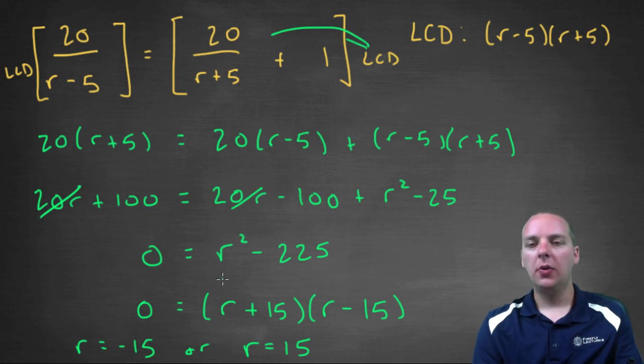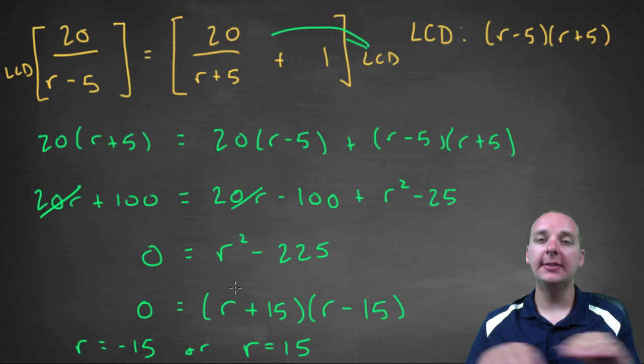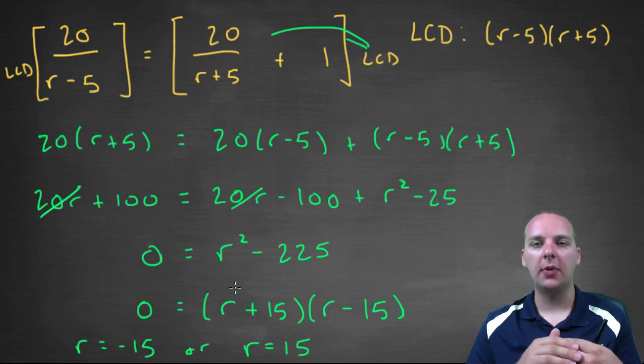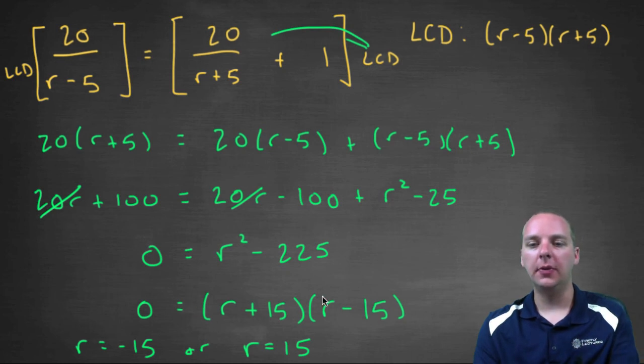Okay, now what does that mean? Well, if you remember previously, r was his speed in still water, where we added 5, when he was going with the current, and subtracted 5 miles per hour, when he was going against the current, because 5 miles per hour was the speed of the river.